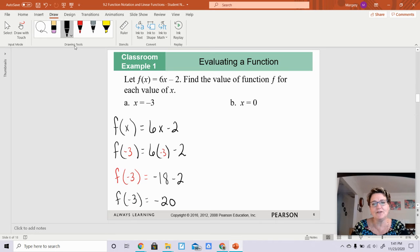Same thing for this one. I have f(0) equals 6 times 0 minus 2. So f(0) is equal to negative 2 because 6 times 0 is 0 and 0 minus 2. And by the way, that is a minus 2, so that should be a negative 2 right there. I'm glad I caught that.